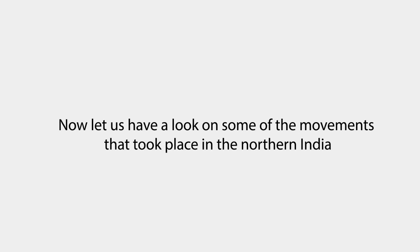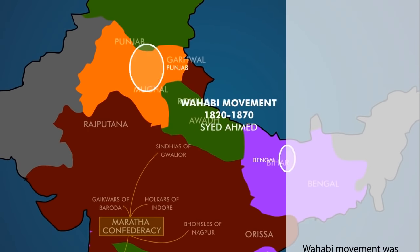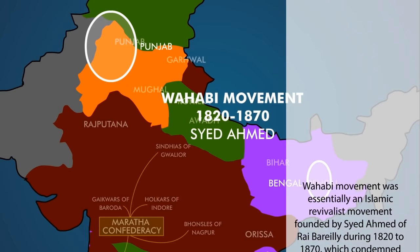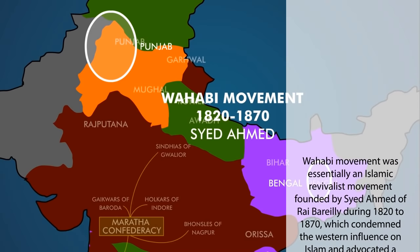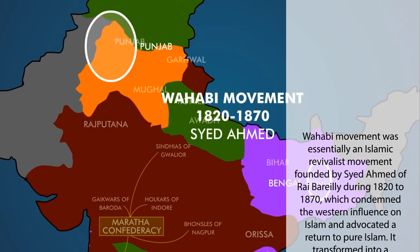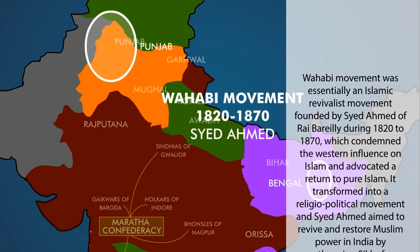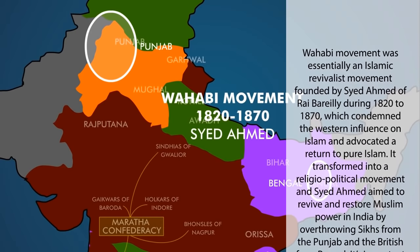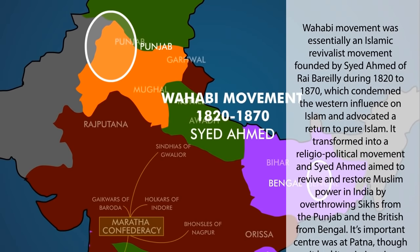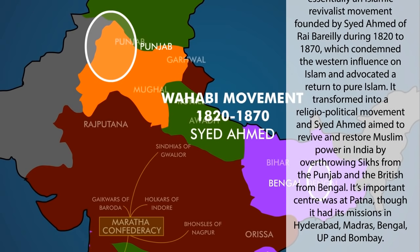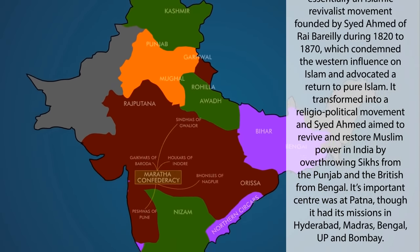Now let us have a look on some of the movements that took place in Northern India. The Wahhabi movement was essentially an Islamic revivalist movement founded by Syed Ahmed of Rai Bareilly during 1820-1870, which condemned Western influence on Islam and advocated a return to pure Islam. It transformed into a religio-political movement and Syed Ahmed aimed to revive and restore Muslim power in India by overthrowing the Sikhs from the Punjab and the British from Bengal. Its important centre was at Patna, though it had missions in Hyderabad, Madras, Bengal, UP and Bombay.